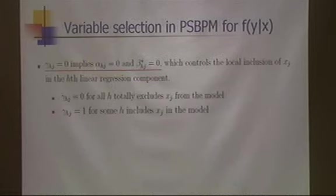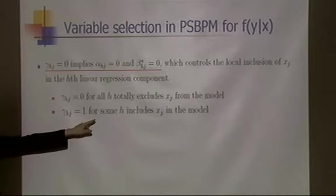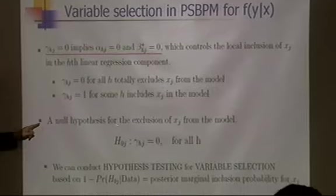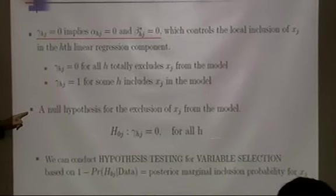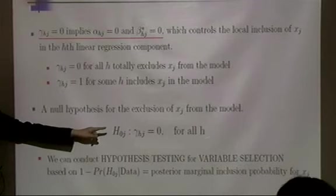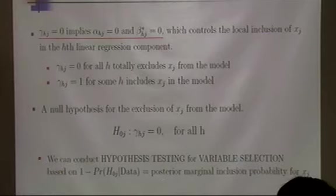With this prior, Bayesian inference gives a posterior distribution for these coefficients being exactly zero. Gamma_{hj} = 0 for all h implies xj is excluded from the model; gamma_{hj} = 1 for at least one h includes xj. We formulate the null hypothesis for exclusion of the j-th predictor as: gamma_h = 0 for all h. We then calculate the posterior probability of this null hypothesis, and one minus that is the posterior marginal inclusion probability, which forms the basis for variable selection testing.